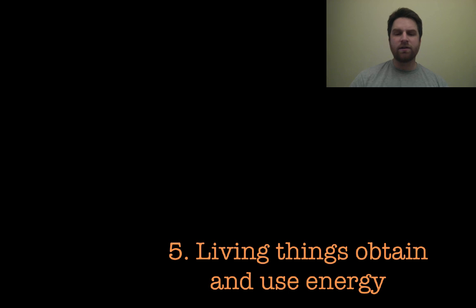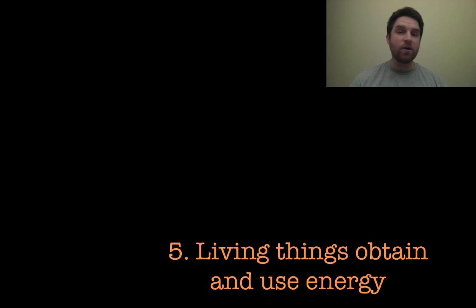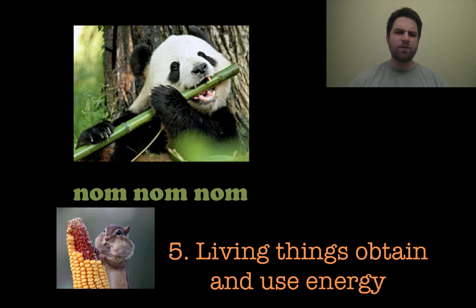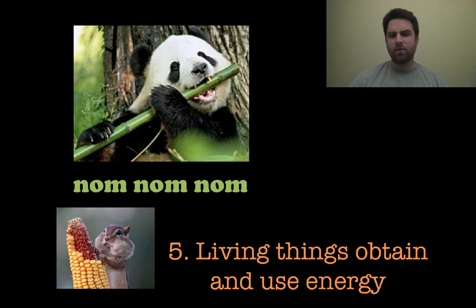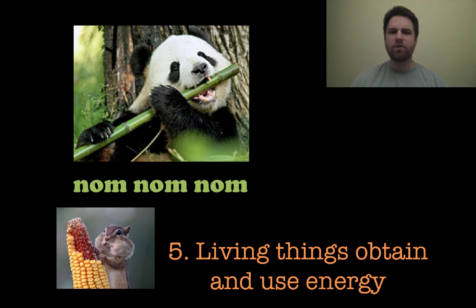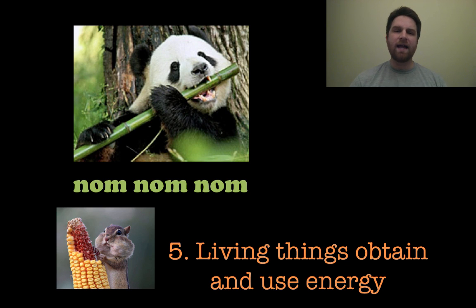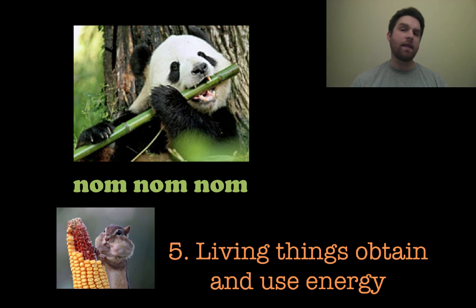Living things obtain and use energy. How do you and I get energy? Most animals eat — we've got a panda eating some bamboo and a squirrel or chipmunk-looking thing eating some corn. There is some way that you have to take in energy in order to use it. Plants use photosynthesis in order to obtain their energy.